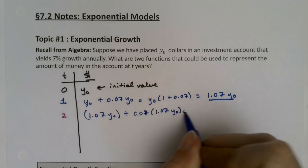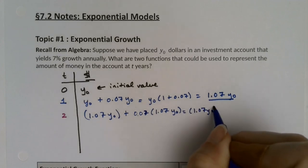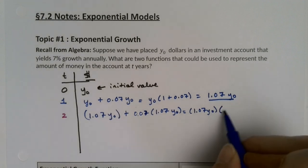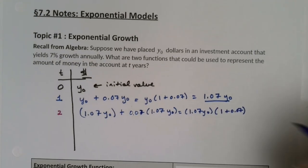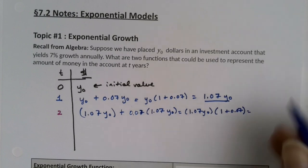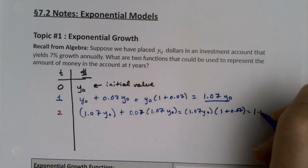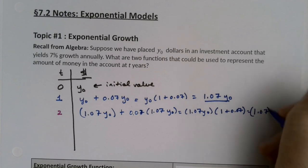I could factor out 1.07 Y-zero, and I'm left with one plus 0.07 — in other words, it's 1.07 squared times Y-zero.